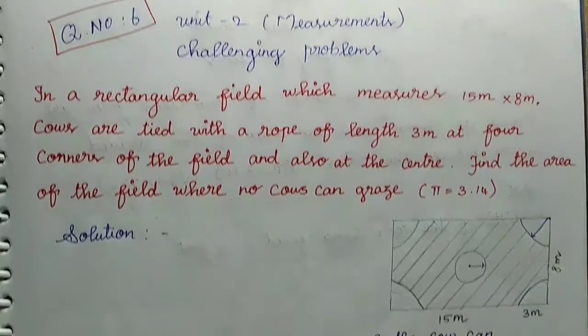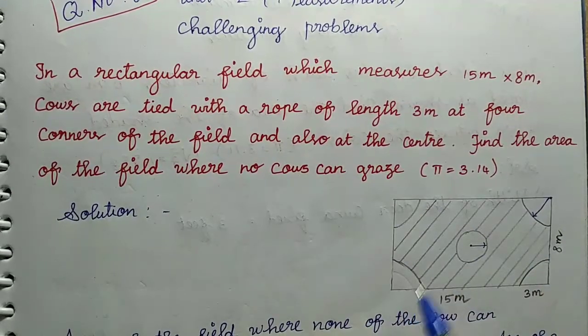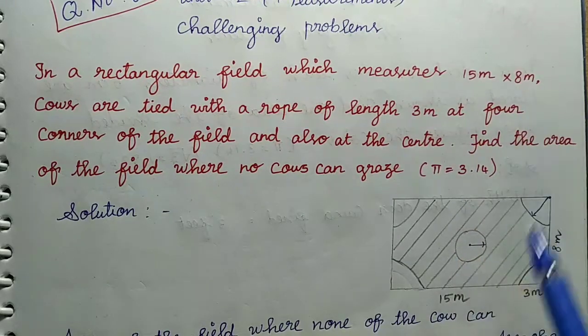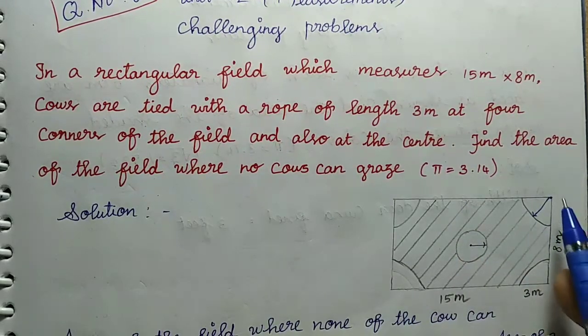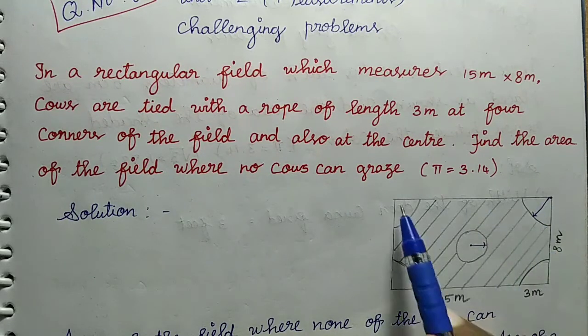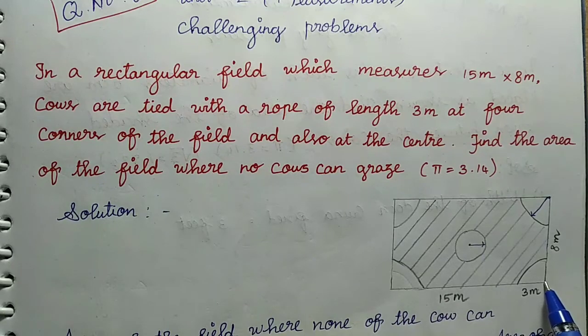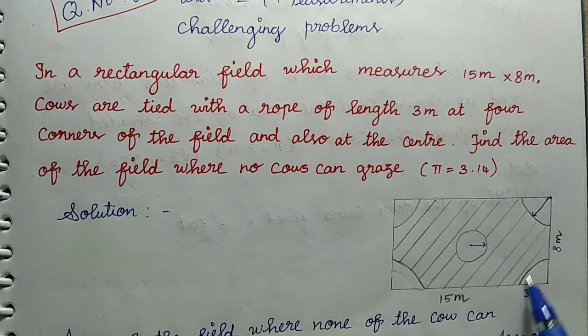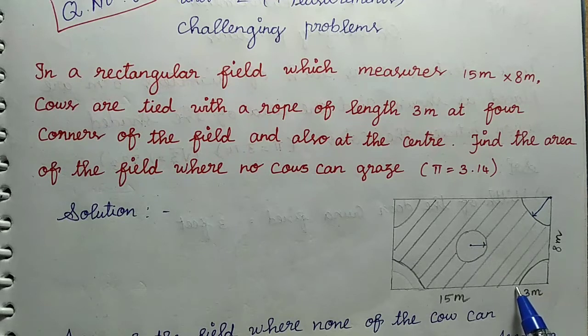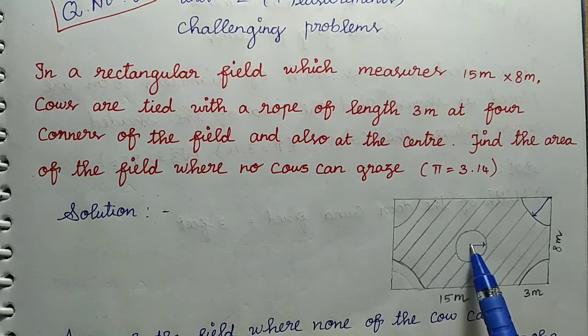Here is a rectangular shape of a field. The field has length and breadth of 15 meter and 8 meter. The field has 4 corners. Cows are tied. The grazing will be in certain areas, but the field's corners are cut by the rope's reach.